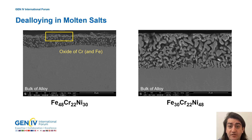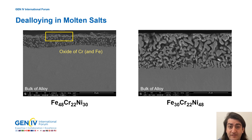At higher temperature, there is a shift to a different mechanism involving lattice diffusion, where porosity changes appearance to negative dendrites. At very high homologous temperature, the dealloying reverts to the feature mostly described in the molten salt literature with a planar interface.